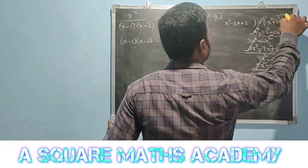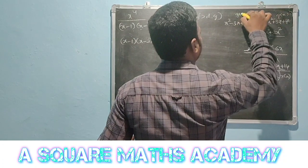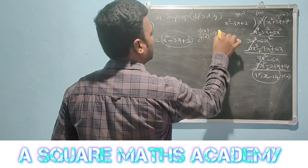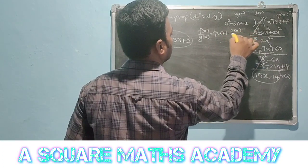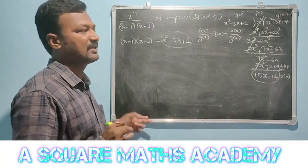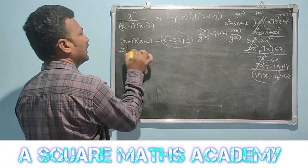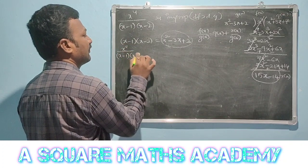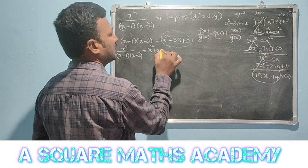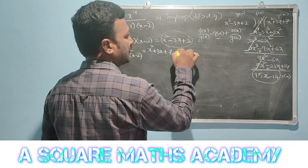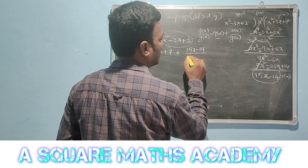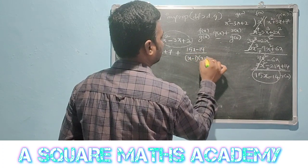This is the remainder and this is Q(x), the quotient. So f(x)/g(x) equals Q(x) plus R(x)/g(x). Therefore, x to the power 4 divided by (x-1)(x-2) equals Q(x), which is x squared plus 3x plus 7, plus R(x) over g(x), where R(x) is 15x minus 14 over (x-1)(x-2). This is equation number 2.